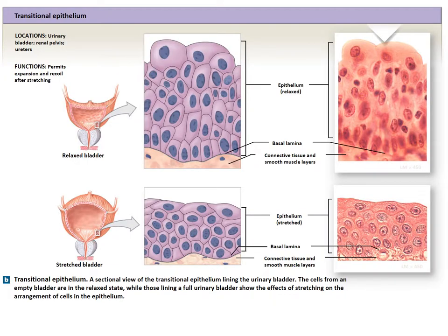The next will be transitional epithelium, a very unique epithelial tissue that is stratified but specialized to permit stretch. The top layer changes appearance based on whether it is relaxed or stretched, and it is found in the urinary bladder, ureters, and renal pelvis.